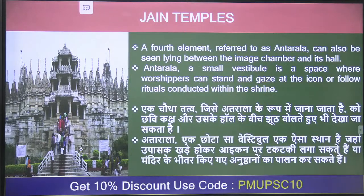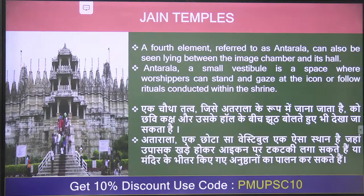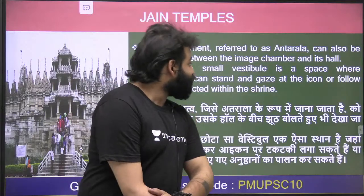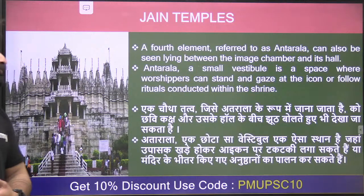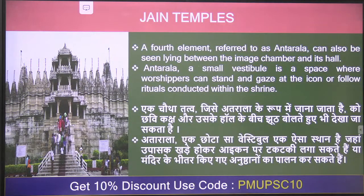A fourth element, referred to as the antral, can also be seen lying between the image chamber and its hall. It is a small vestibule - a space where worshippers can stand and gaze at the icon or follow rituals conducted within the shrine. This is the antral.